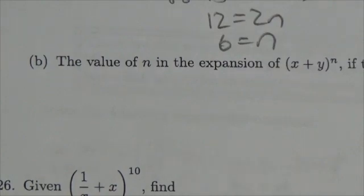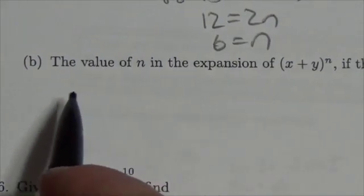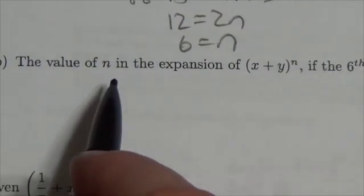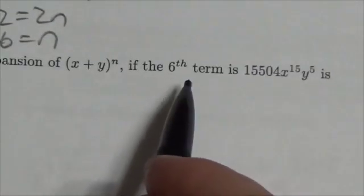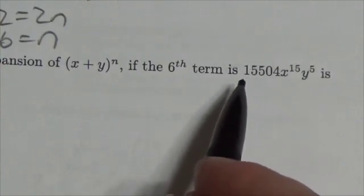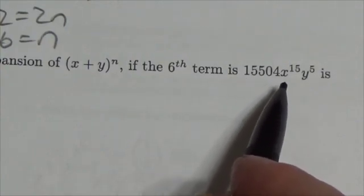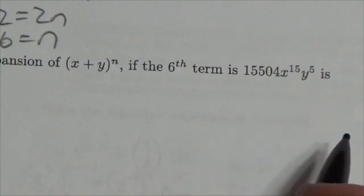Hi everyone. So this question again we're talking about binomial expansion. This one says find the value of n in the expansion of (x+y)^n if the sixth term is 15,504x^15y^5.